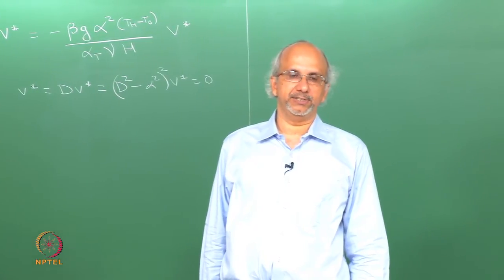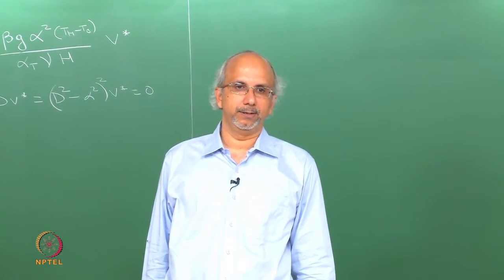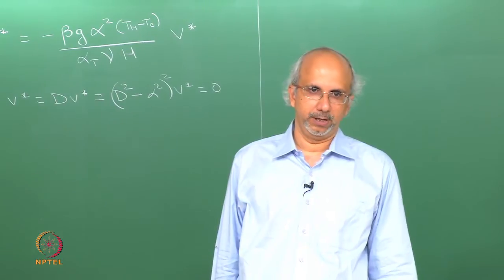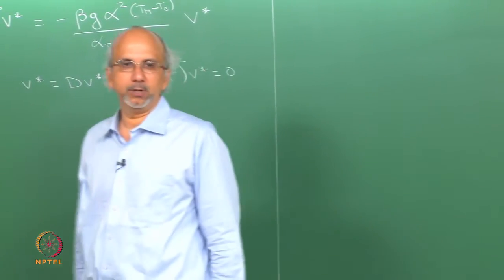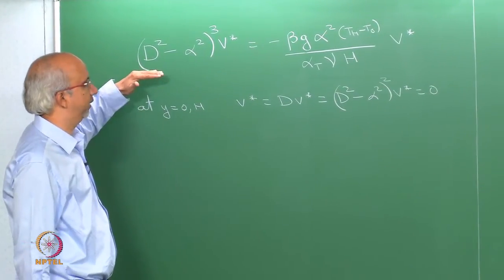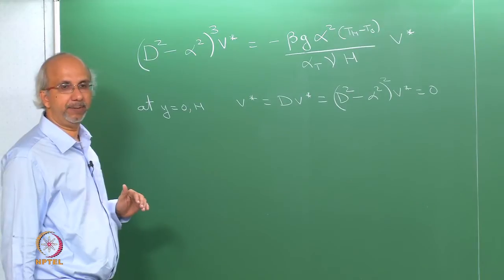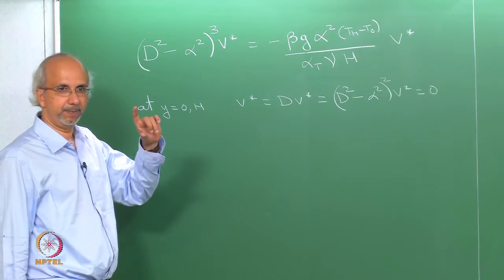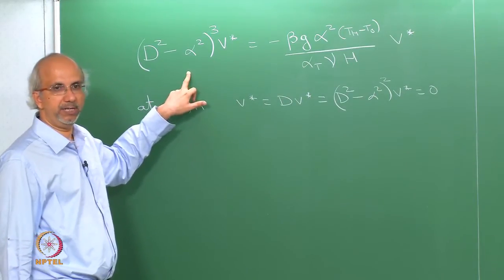Welcome to today's lecture where we will be discussing the Rayleigh-Bénard convection problem. We will continue from where we left off in the last class. I have written down the equation which describes the perturbation V star, which talks about the functional dependency of Y of the perturbation. V star is governed by this sixth order ordinary differential equation.